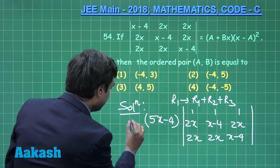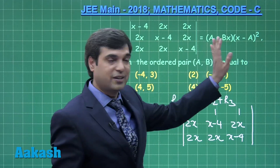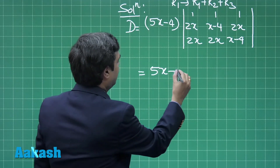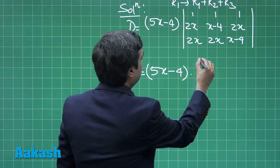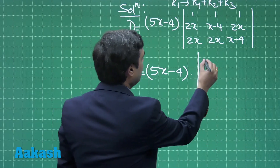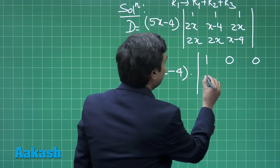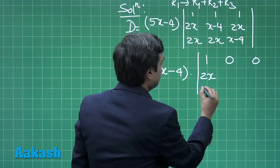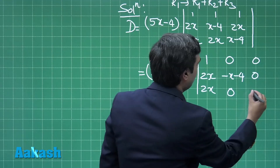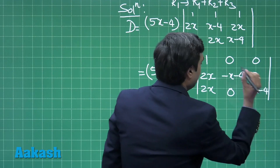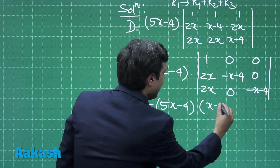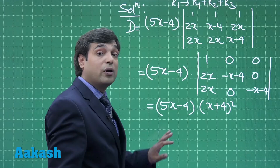Let us call the remaining determinant D. Further simplifying, we apply C2 − C1 and C3 − C1 to make two zeros in the first row. This gives the first row as [1, 0, 0] with the remaining entries as (2x) and (−x − 4). The determinant evaluates to (5x − 4)(x + 4)².